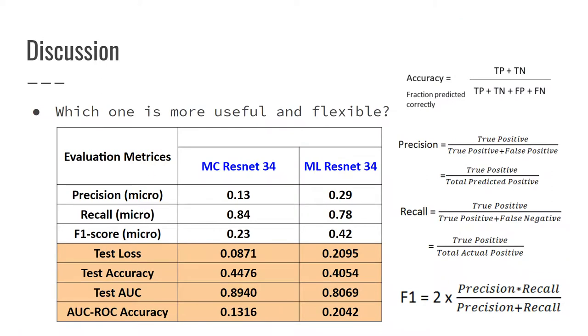Based on our result, each strategy is more useful and flexible. It is obvious that the ResNet models perform better than their logistic regression counterpart. Maybe we want to say that multi-class is the winner due to the higher test accuracy.